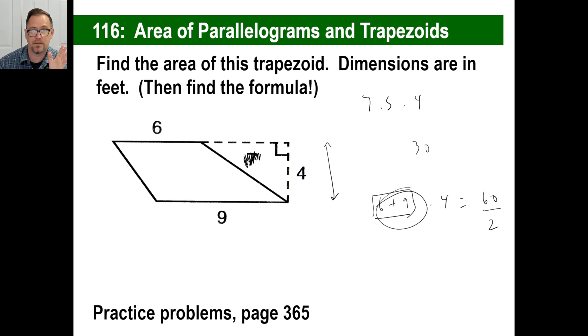So trapezoid, excuse me, parallelogram, what's the base, what's the height, multiply them together, gone. Don't get fooled by the diagonal. The trapezoid is basically finding the average of the bases and multiply that by the height and boom, you're done. Let's look at the ones on page 365. So pause it and come back.